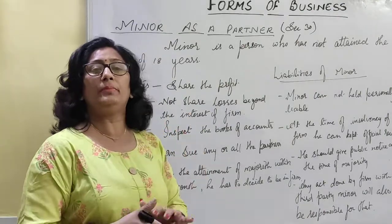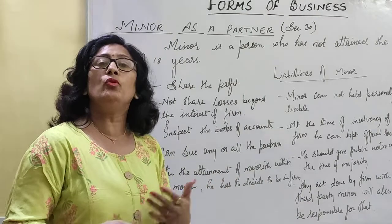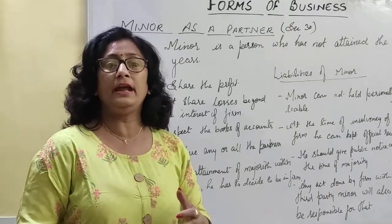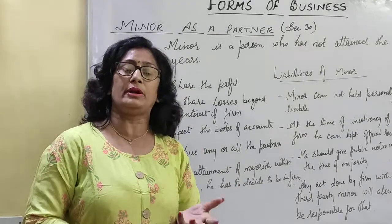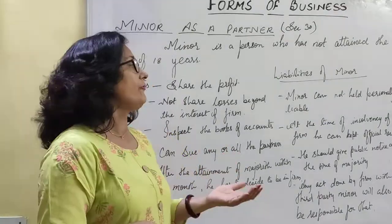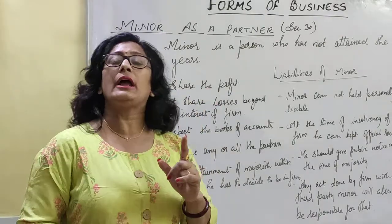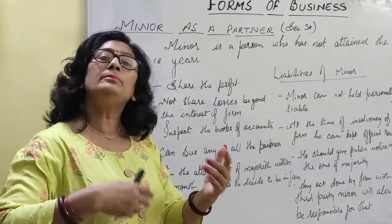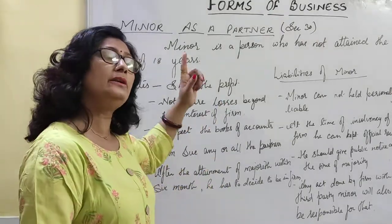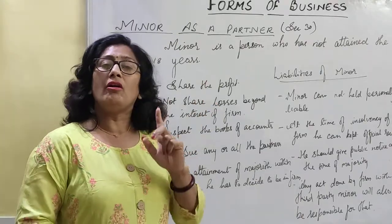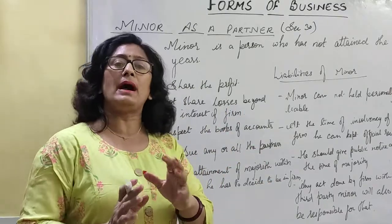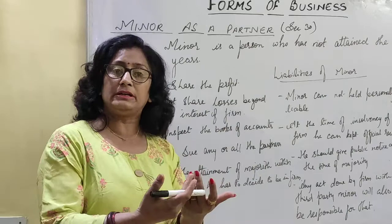Because a minor is not yet major, he does not have the capability to do any kind of business contract. He can do a social contract, but he cannot do a business contract, as a minor does not have any personal property. Therefore, a minor is not allowed to do any business activity, but he could be an agent, and he could be a partner of a firm if the rest of the partners have given their consent.